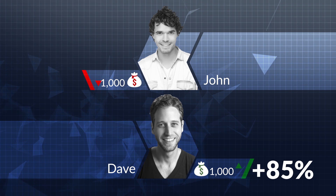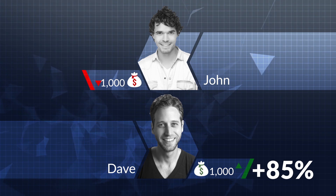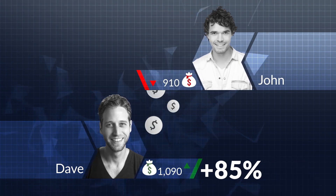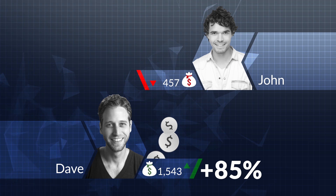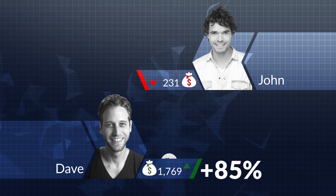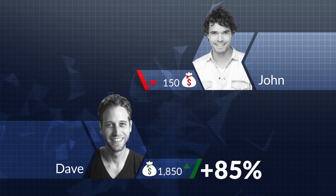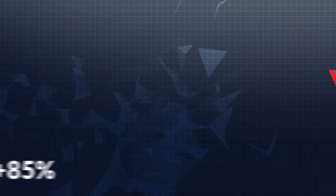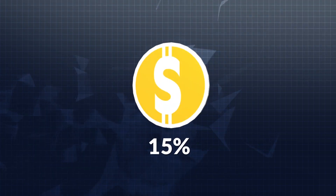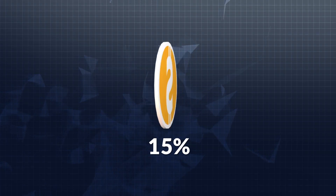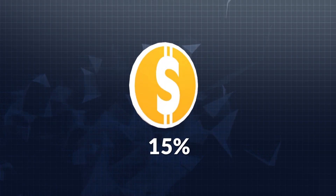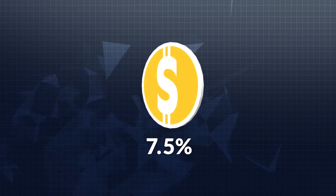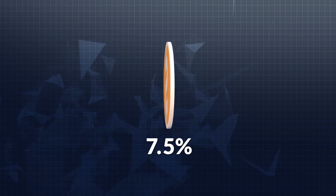The euro happened to go higher. Dave's prediction turned out to be the right one — he will get an 85% return, i.e. $850, bringing his total to $1,850. His profit is derived from John's loss. The remaining 15% is the broker's commission. In this scenario, the broker is entitled to 7.5% commission for every possible outcome.